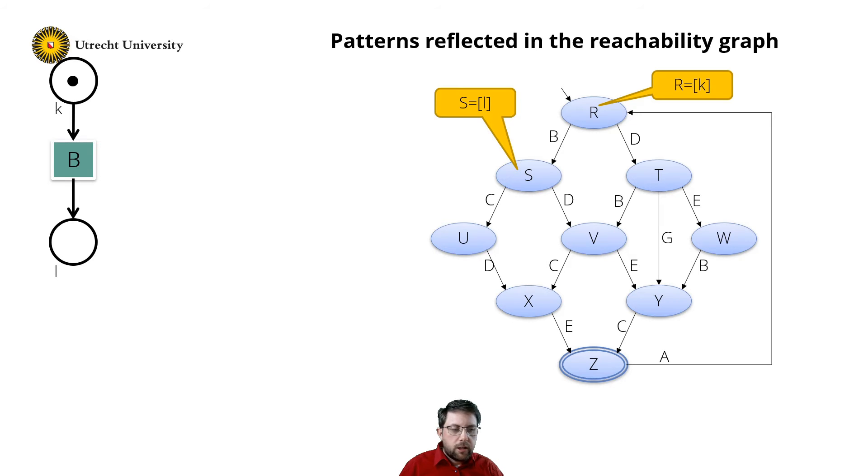Now let's look at transition D. I could model it as a choice, resulting in the following net. But now I have a problem in completing this diamond over here. So, choice is not the right choice here.